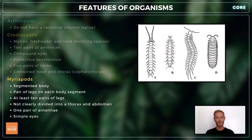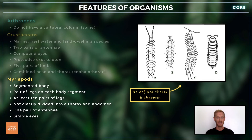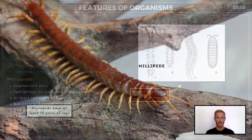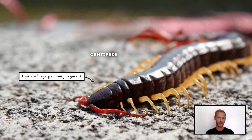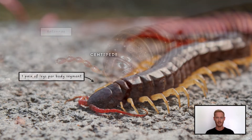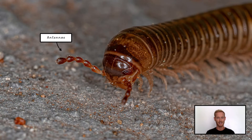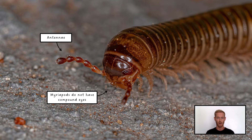Finally, myriapods — including millipedes and centipedes — have a head and a segmented body that is not clearly divided into a thorax and abdomen. They have a pair of legs on each body segment, and as the myriapod grows, extra segments are formed so that the number of legs and body segments increases. They have a pair of antennae and simple eyes used for sensing their environment.